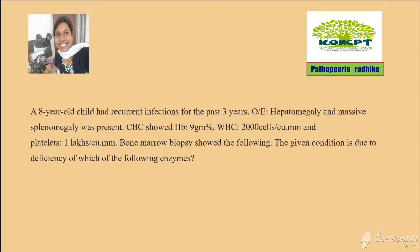Question for today: an eight-year-old child had recurrent infections for the past three years. On examination, hepatomegaly and massive splenomegaly were present. CBC showed hemoglobin of 9 grams, WBC of 2000 cells per cubic millimeter, and platelet of 1 lakh. Bone marrow biopsy showed the following. The given condition is due to deficiency of which of the following enzymes — and this is the bone marrow finding.